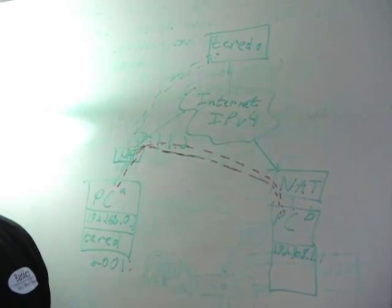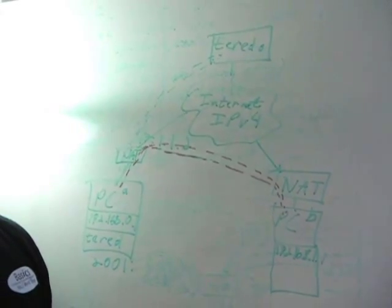Well now, any developer that wants to can easily do NAT traversal with IPv4 by just making sure their application supports IPv6. So it really simplifies the model.